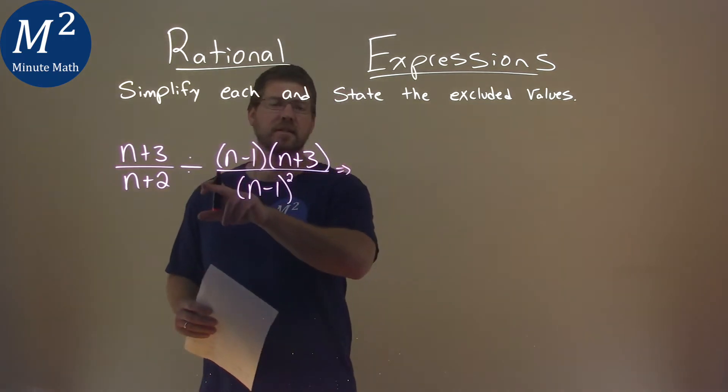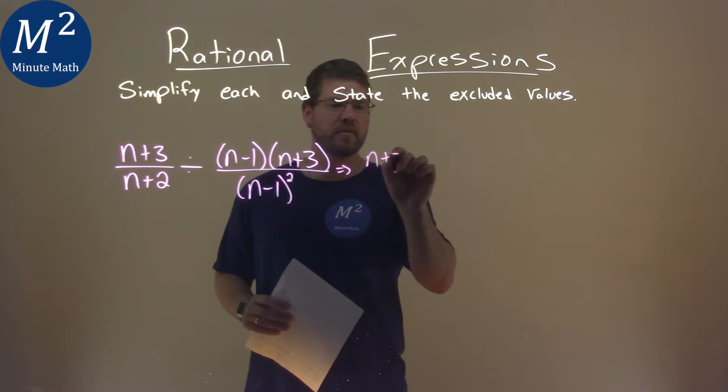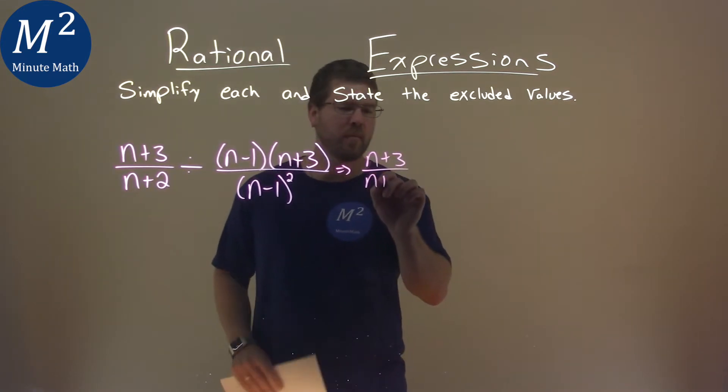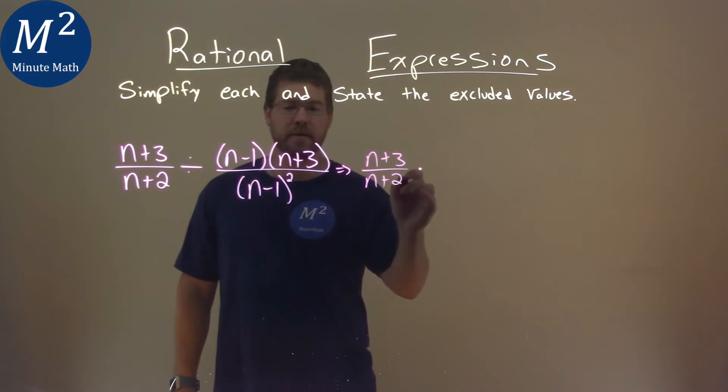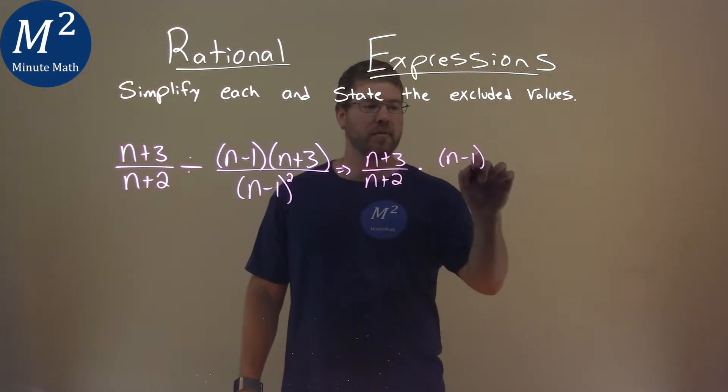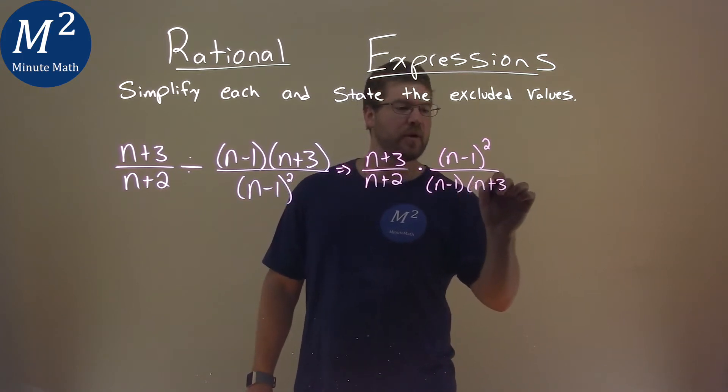First thing is, when I see division with a rational expression, I'm going to flip that. So we have n plus 3 over n plus 2, that stays there, but by flipping it, we're doing multiplication here. So we have n minus 1 squared over n minus 1 times n plus 3 here.